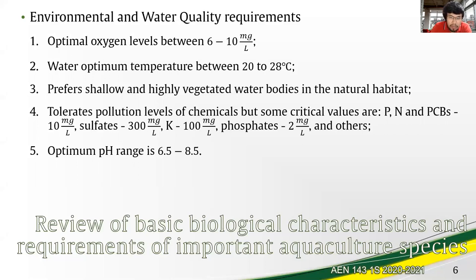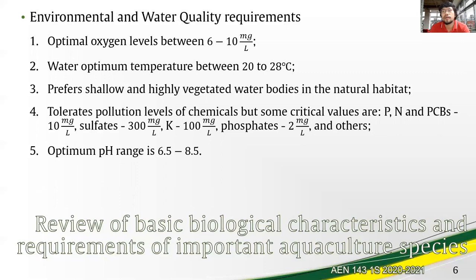It tolerates chemical pollution levels, but there are critical values to note: phosphorus, nitrogen, and polychlorinated biphenyls or PCBs at 10 milligrams per liter; sulfates at 100 milligrams per liter; potassium at 100 milligrams per liter; and phosphates at 2 milligrams per liter, among others. The optimum pH range for the growing of carp is between 6.5 to 8.5.